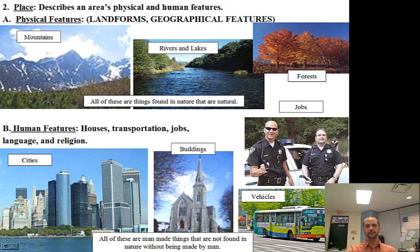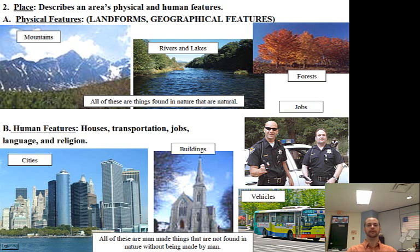If you say the Empire State Building is a really great building, I'm going to know where you're talking about, because the Empire State Building is in New York City. If you tell me you just went up to the top of the Sears Tower, then I'll know for sure you've been to Chicago. Other buildings — religious buildings, churches, cathedrals — can also be used to describe a place.